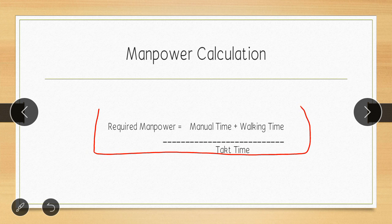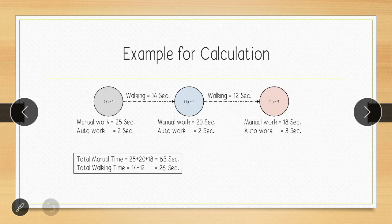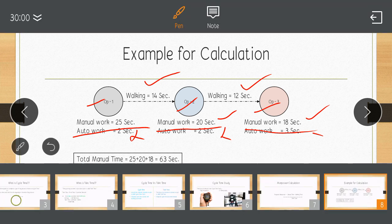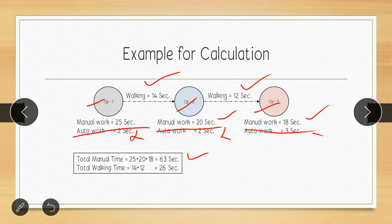The formula to calculate manpower using takt time is: Required Manpower = (Manual Time + Walking Time) ÷ Takt Time. For example, there are three operations. Operation 1: manual work is 25 seconds, walking time to operation 2 is 14 seconds. Operation 2: manual work is 20 seconds, auto work is 2 seconds, walking time to operation 3 is 12 seconds. Operation 3: manual work is 18 seconds, auto work is 3 seconds. We only need manual time and walking time.